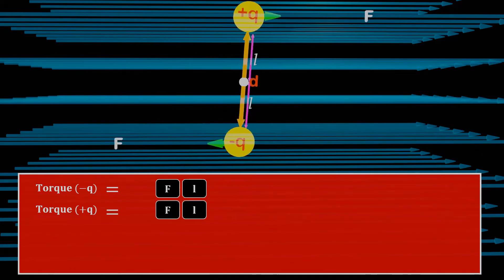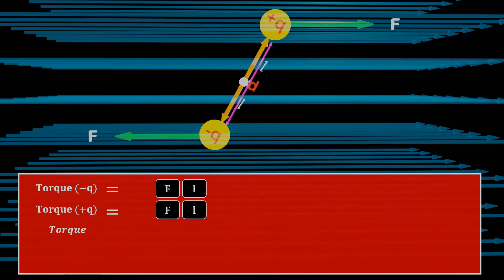Since both torques are rotating the dipole clockwise, the total torque is the sum of the two, which is equal to 2F multiplied by L. We also know that F is equal to QE, where E is the electric field intensity.